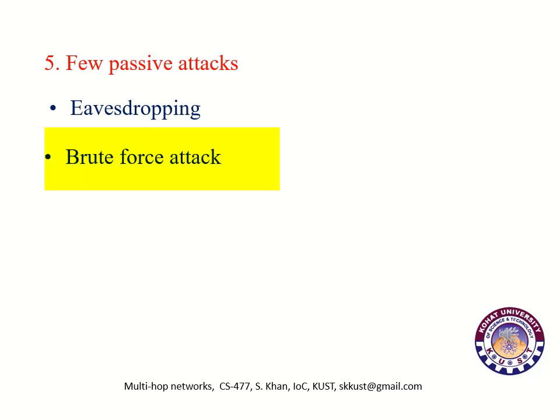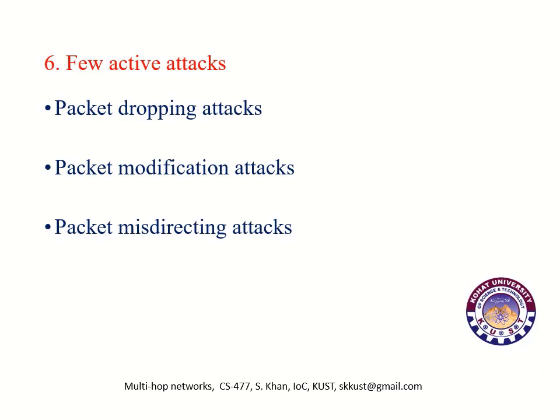After any successful passive attack, the attacker has the desired information about the nodes and is able to conduct an active attack. An active attack attempts to alter system resources or affect their operations. Active attacks involve some modifications of the data stream or creation of false attacks, and are basically used to harm network traffic. Two important types of active attacks are packet dropping attacks, packet modification attacks and packet misdirection attacks.